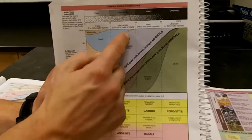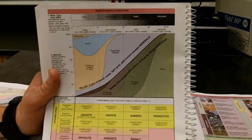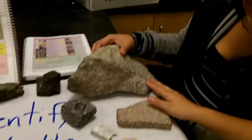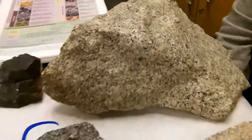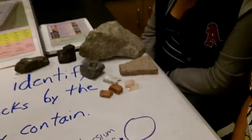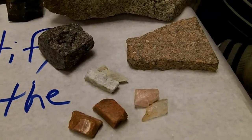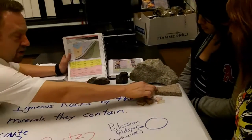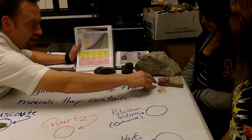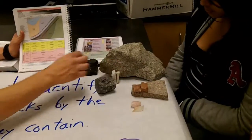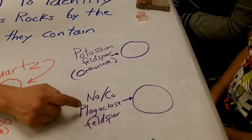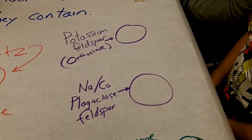Intermediate is going to be something that's kind of half light and half dark — kind of like an Oreo blizzard. Can you find some rocks or minerals that might be the light-colored ones in an intermediate rock? We've got two different kinds of feldspars. One is the pink feldspar that goes in granite, and the other is the feldspar in this other rock. You've got the sodium and calcium plagioclase feldspar — those are the white ones.